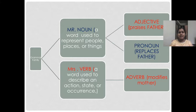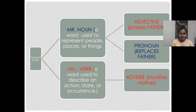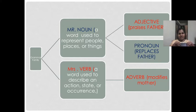Then there is Mrs. Verb. What is meant by verb? Verb describes an action, a state, or an occurrence. For example, 'teaching' — is it a noun? No, it is an action. Dancing, singing, sleeping — these are all actions. So verb represents actions. This is verb. Now you know who Mr. Noun is and who Mrs. Verb is.